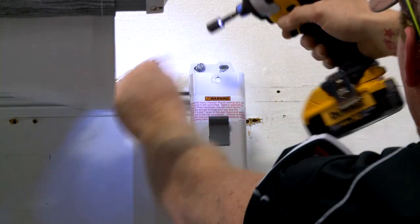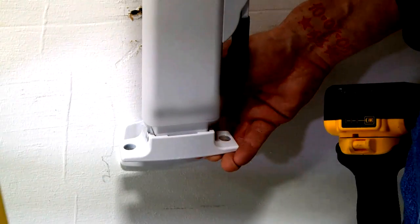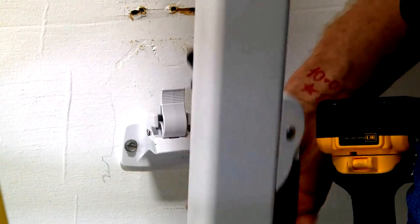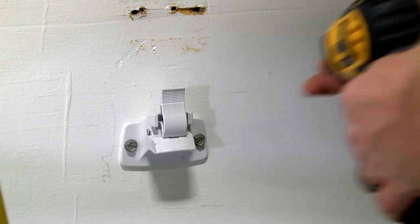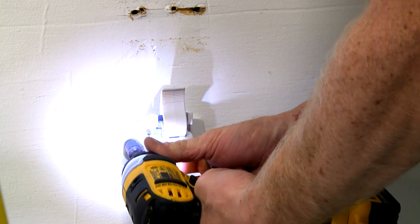Next, remove the fasteners from the upper mounting bracket of the support arm assembly. Then, detach the support arm assembly from the lower mounting bracket. Remove the fasteners from the lower mounting bracket of the support arm assembly. Discard the mounting bracket.